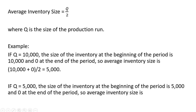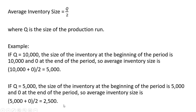If the firm did two production runs of 5,000 each, the inventory at the beginning of each period is 5,000 and zero at the end, so the average inventory size in each period is 5,000 plus zero divided by 2, or 2,500. The average inventory size is 2,500 in both the first and second periods.